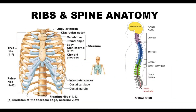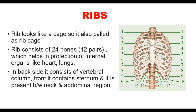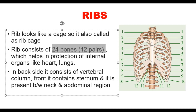Hi everyone, welcome back to another video. In this video we are going to discuss ribs and spine anatomy. Ribs look like a cage, so it is also called the rib cage. Ribs consist of 24 bones and 12 pairs, as you can see in the numberings here.